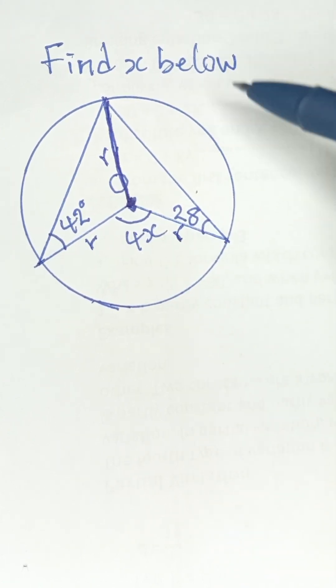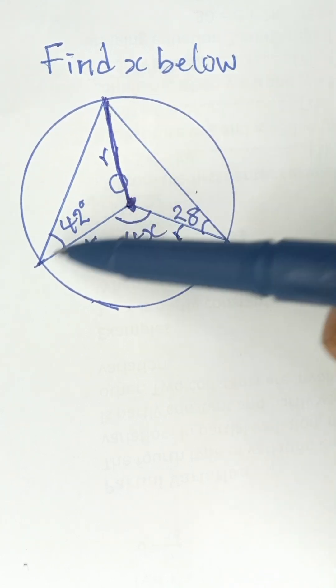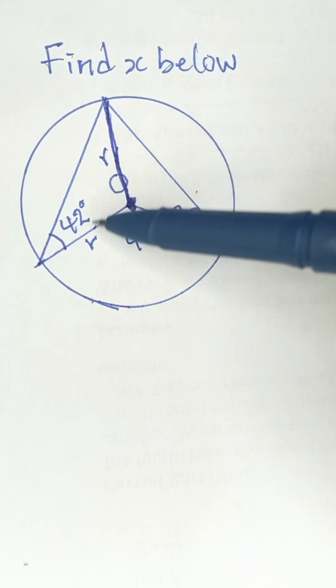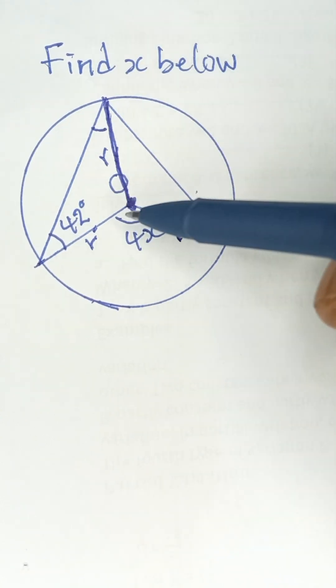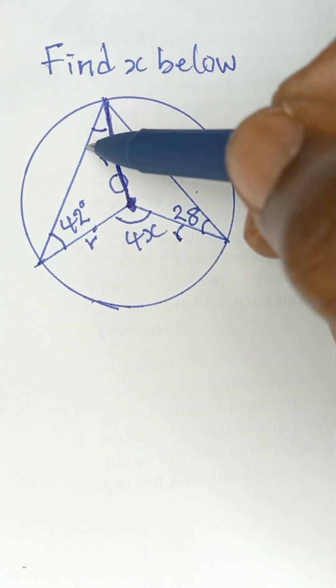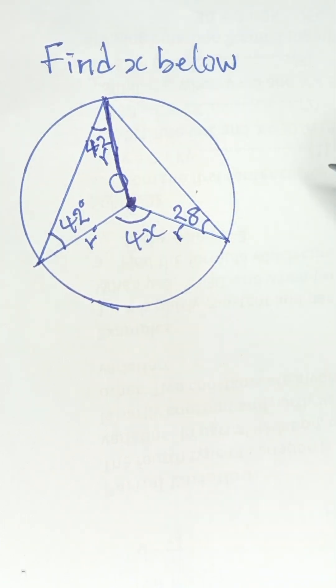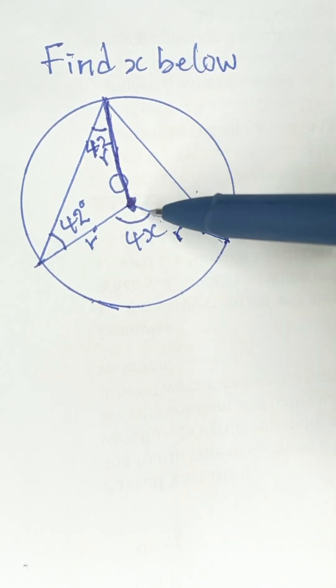Now if you look at this, this radius is also a, so that means this triangle is an isosceles triangle because these two sides are equal. The base angles of an isosceles triangle are equal, so if this is 42, this angle is also 42 degrees.